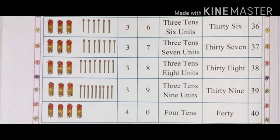Four bunches of math sticks means 40 math sticks. That is 4 tens. The spelling of 40 is F-O-R-T-Y: 40.